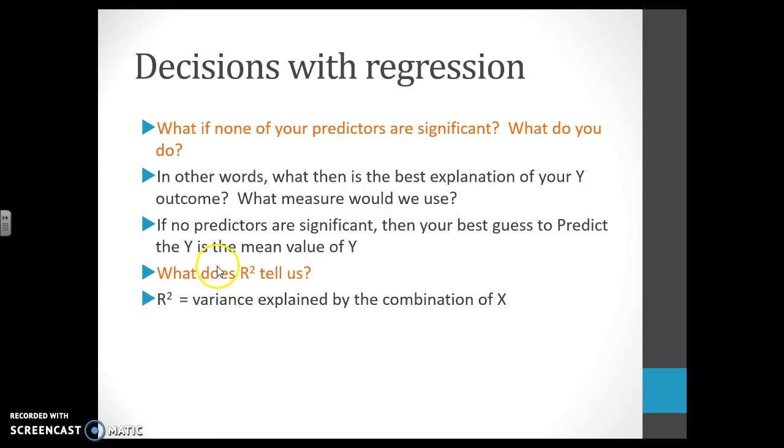Keep in mind that the R-squared value in multiple regression is the variance explained by the combination of X. We don't know individual contributions. This is the combination of the three predictors that you have in the model and how much those three combined are explaining Y. And keep in mind that also gives us the unexplained variance. So if I'm explaining 40%, I'm not explaining 60%.